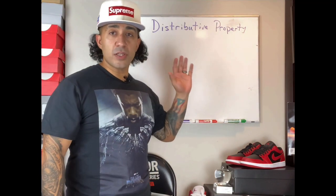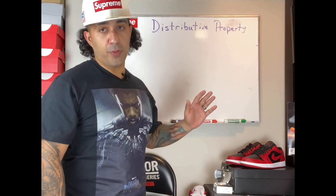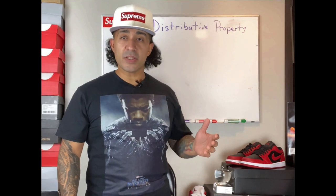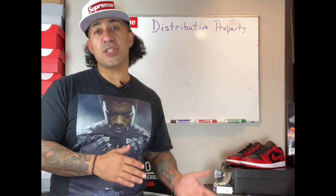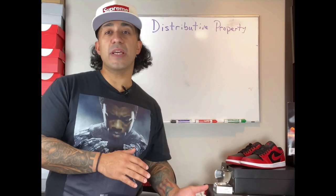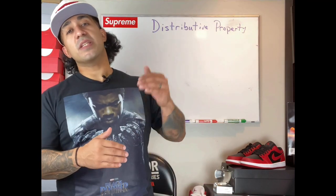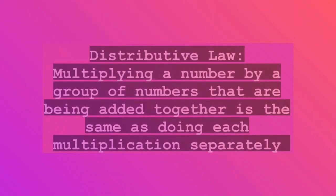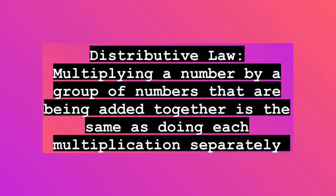Today we'll be talking about the distributive property. The distributive property is something that comes up a lot, especially when you start hitting later mathematics — fifth, sixth, seventh, eighth grade. The distributive property literally says that multiplying a number by a group of numbers that are being added together is the same as doing each multiplication separately.